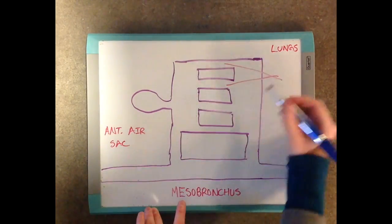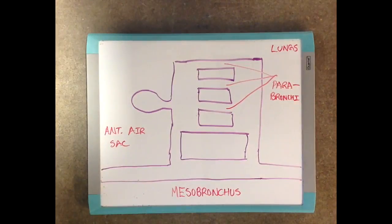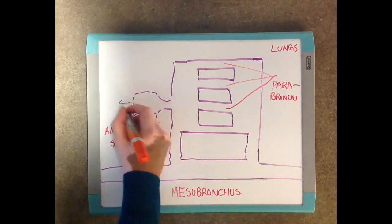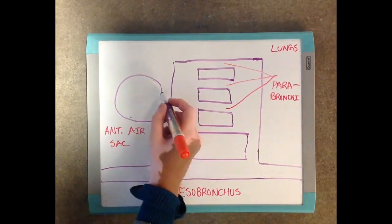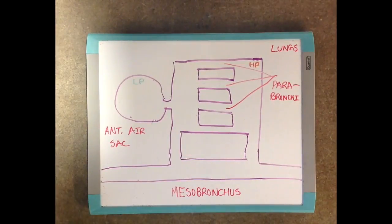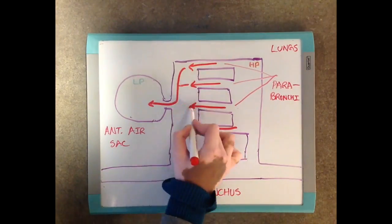In second inspiration, certain chest muscles cause the anterior air sacs to expand, creating an area of lower pressure compared to the lungs, causing the air to rush into the sacs.